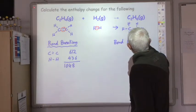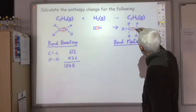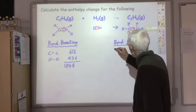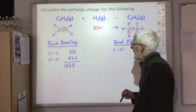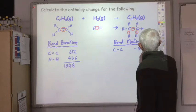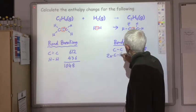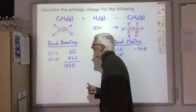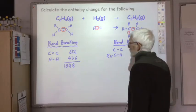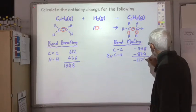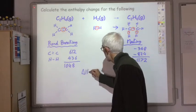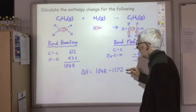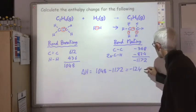For bond making, the bonds we form are one C-C single bond and two C-H bonds. The energy released forming the C-C single bond is minus 348 kJ/mol. The C-H bond value is 412 kJ/mol, but we make two of them, giving minus 824 kJ/mol. The total energy given out by bond making is minus 1172 kJ/mol. So the ΔH value is bond breaking plus bond making: 1048 + (minus 1172) = minus 124 kilojoules per mole.